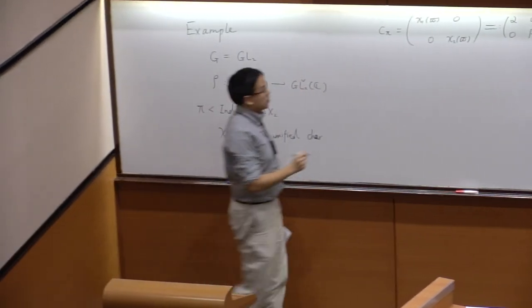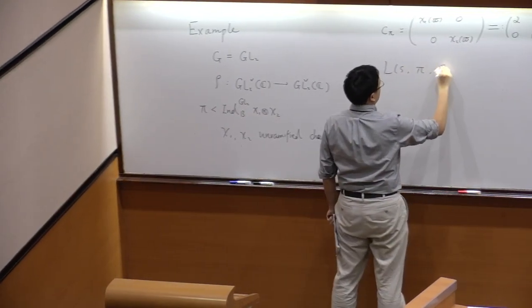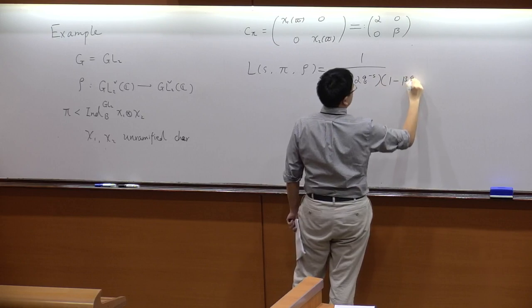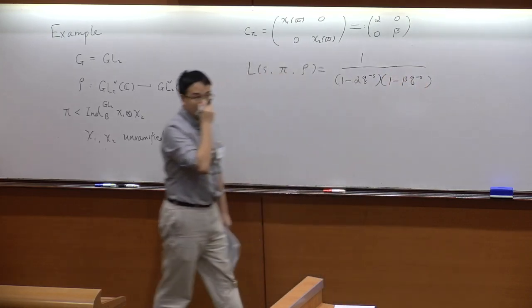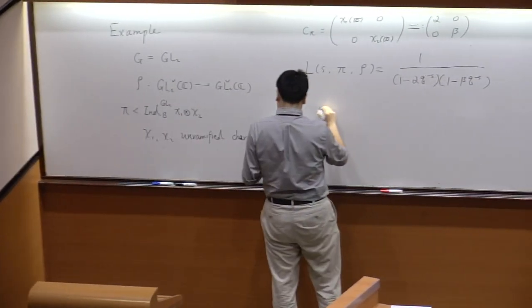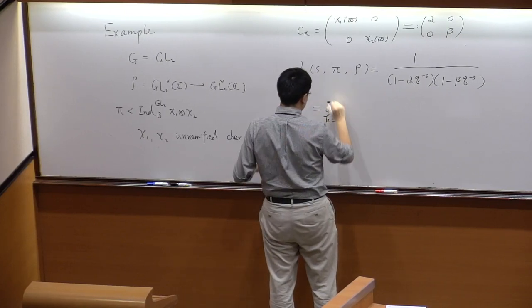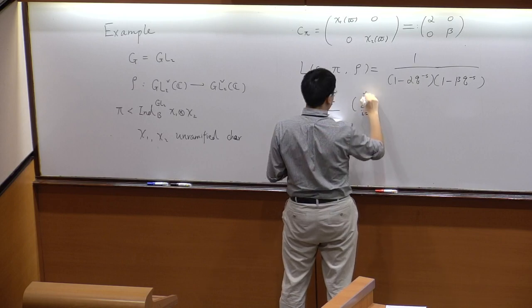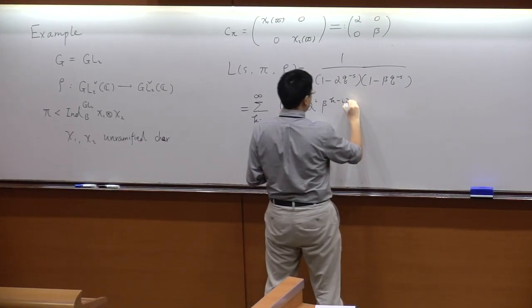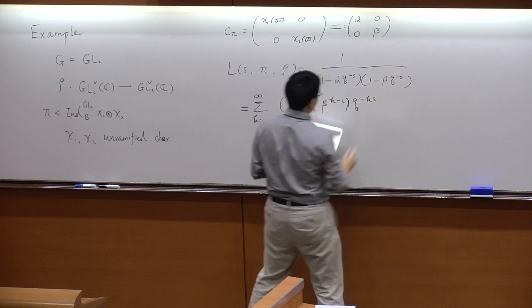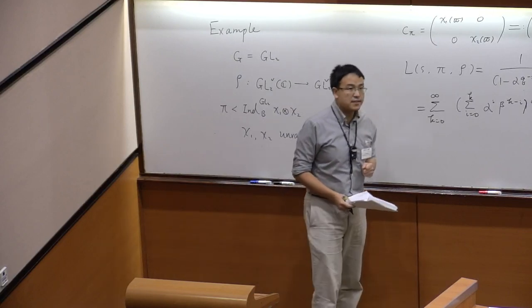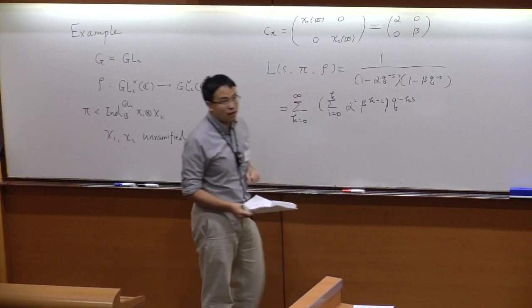We're going to have our standard L-function, which is just 1 over (1 − α·q^{−s})(1 − β·q^{−s}). We have a rational function like this, and we can do the Taylor expansion. This makes sense when we take the real part of s sufficiently large, which is the convergence domain depending on the absolute values of α and β.